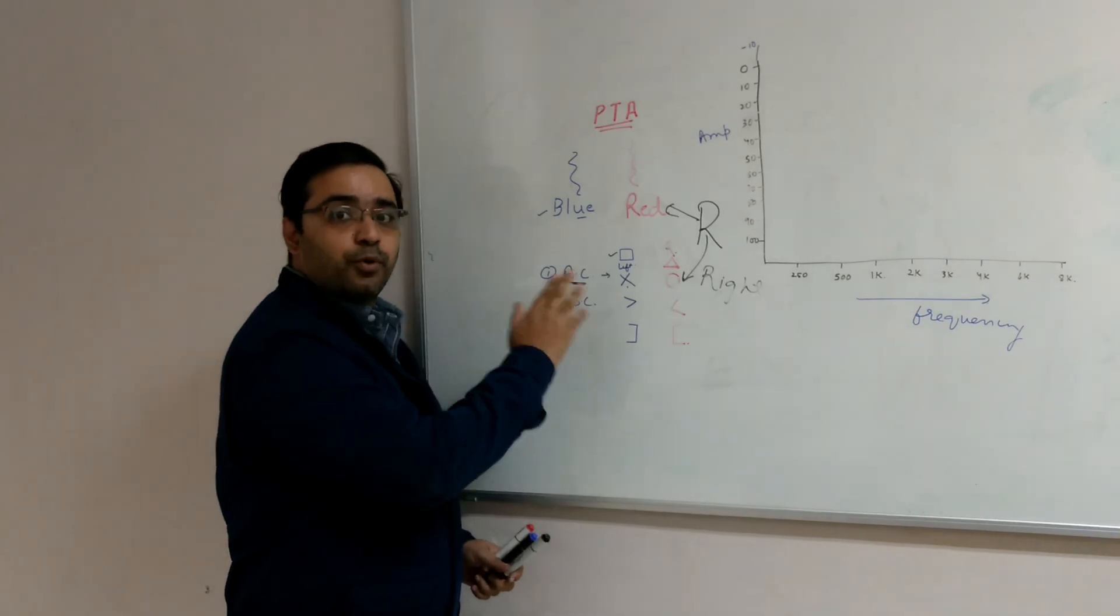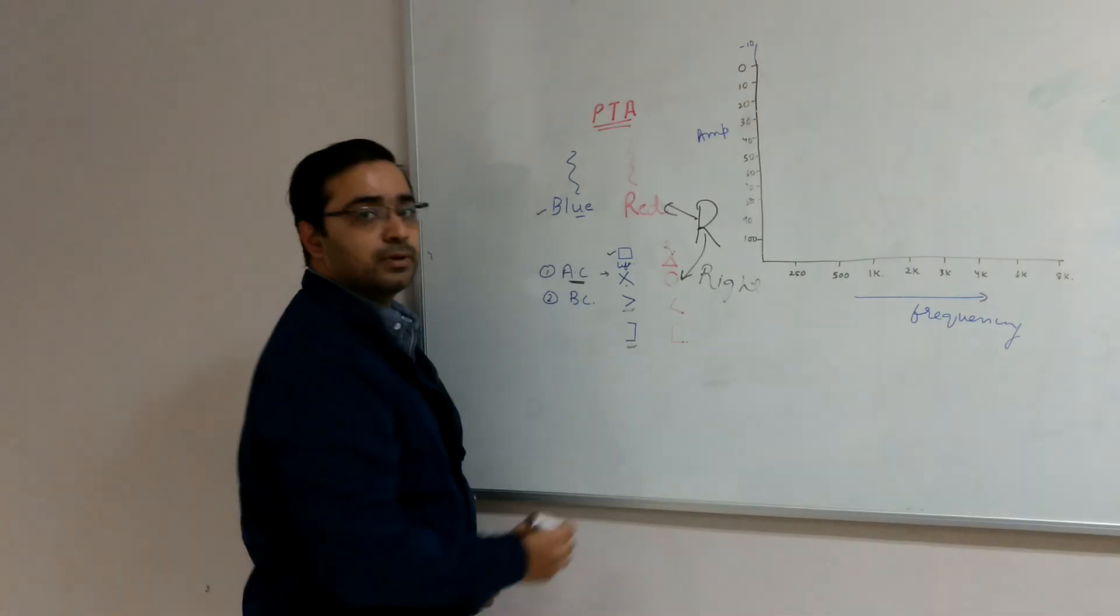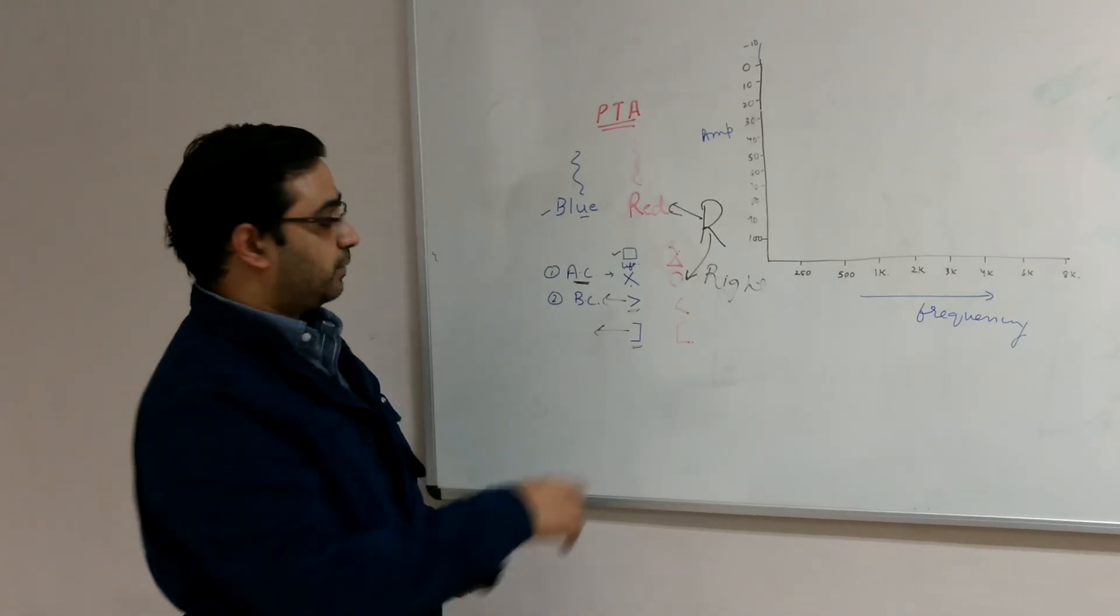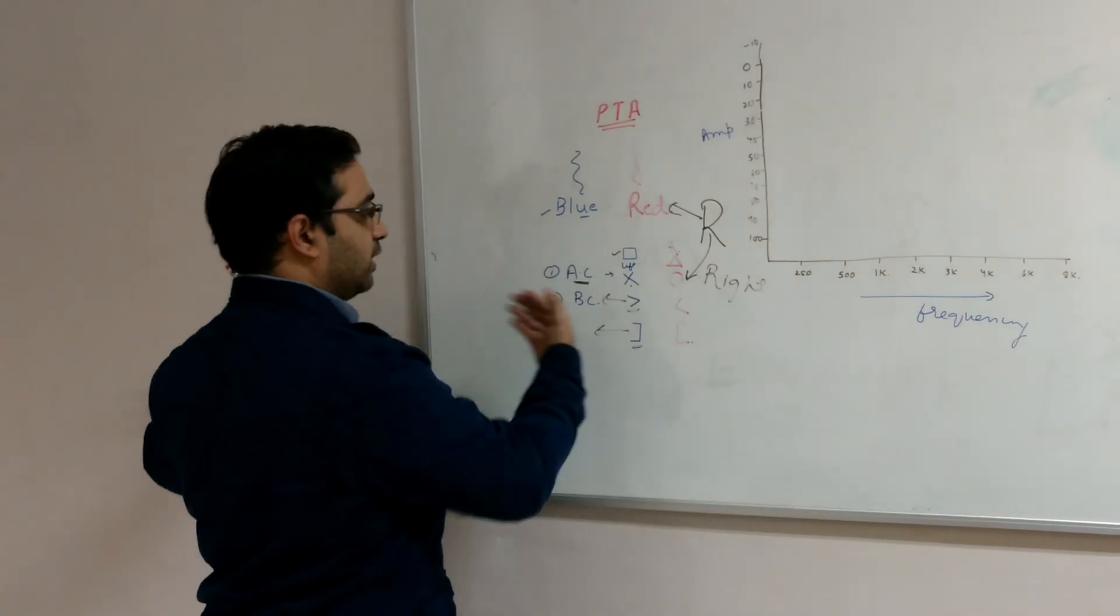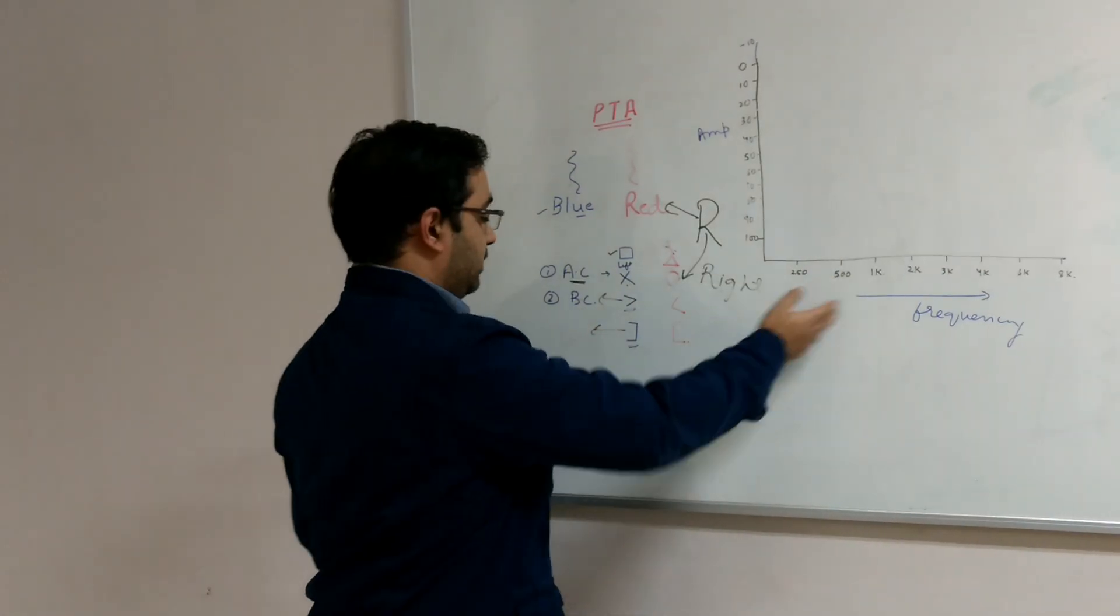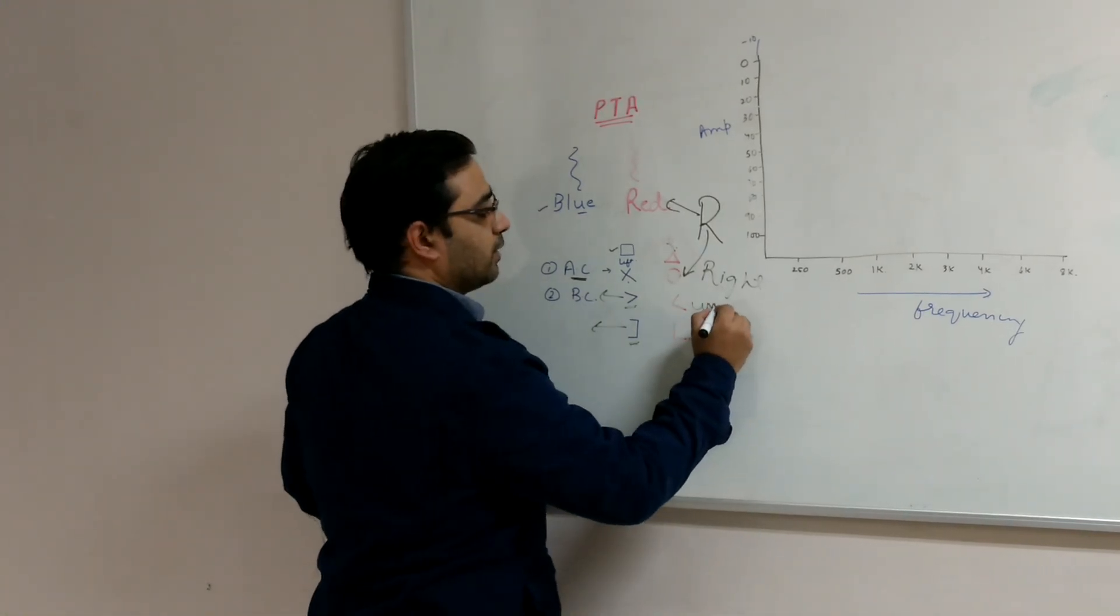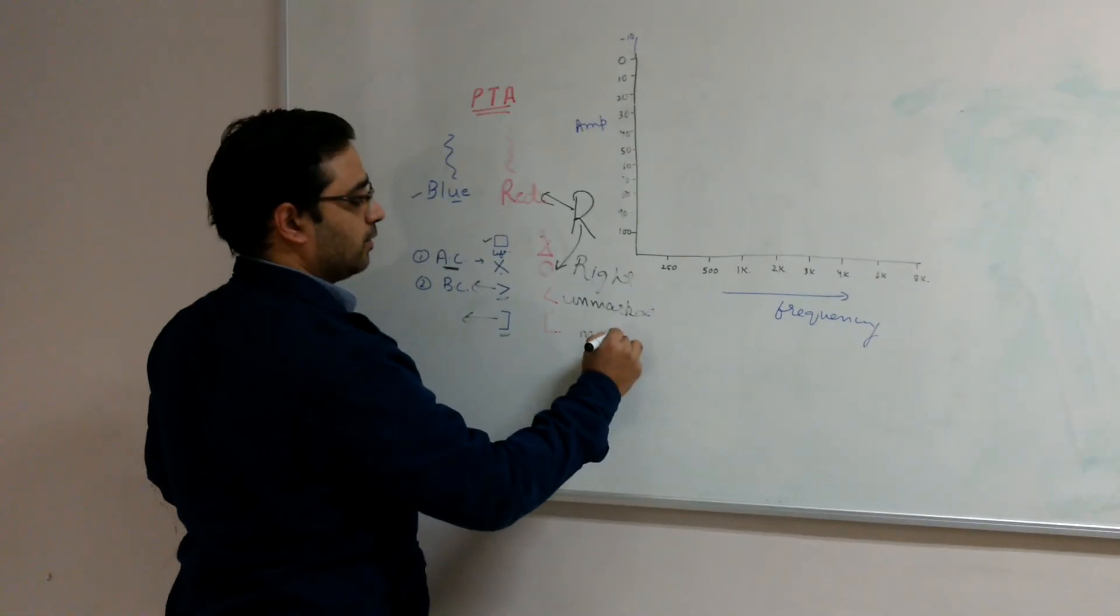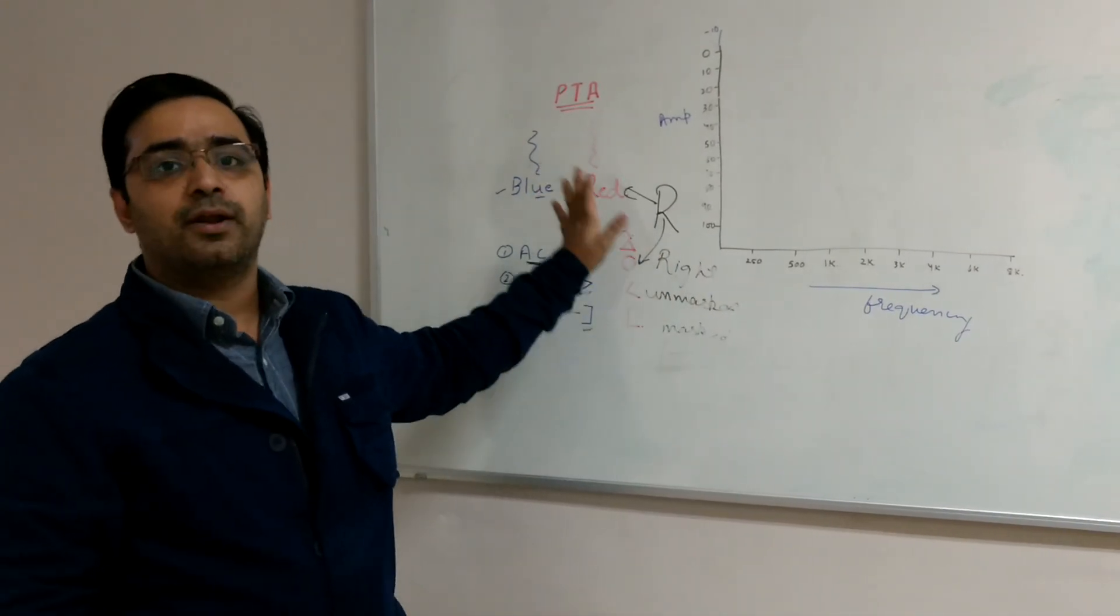About bone conduction. Bone conduction is usually marked by either this symbol or a bracket symbol. So whichever side this bracket opens is the side. So suppose this symbol is opening towards my left side, it is my left side when I am facing towards the audiogram. So my left side is left, my right side is right. My left side this symbol means left, this is unmasked, this is masked. So these are the things you should always remember before reading an audiogram.